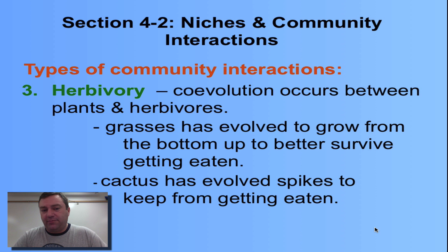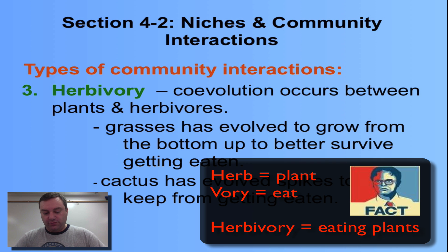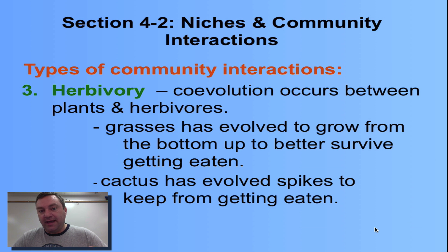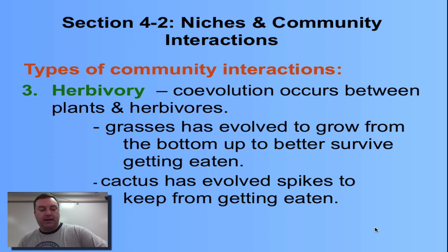The third type of community interaction we'll cover is herbivory. 'Herb' refers to plants, and 'vori' means to eat, like in carnivore. Herbivory is essentially animals eating plants. This involves co-evolution that occurs when a herbivore and plants evolve in response to each other.